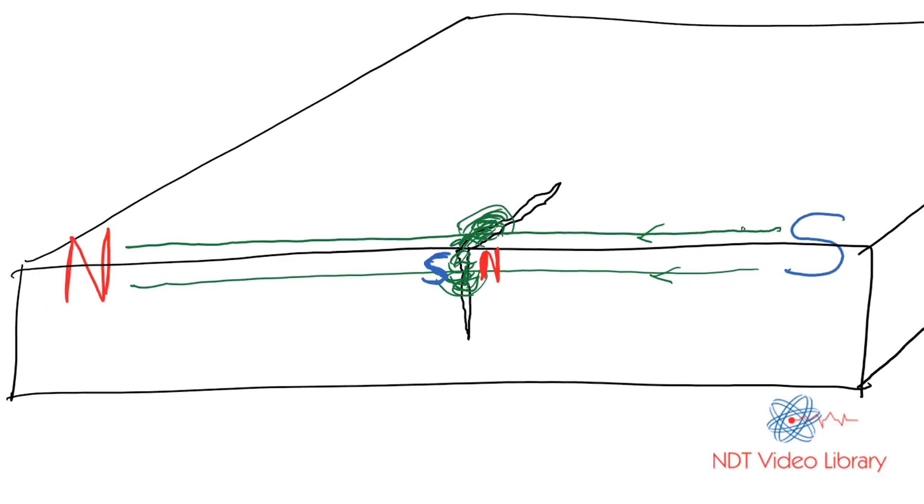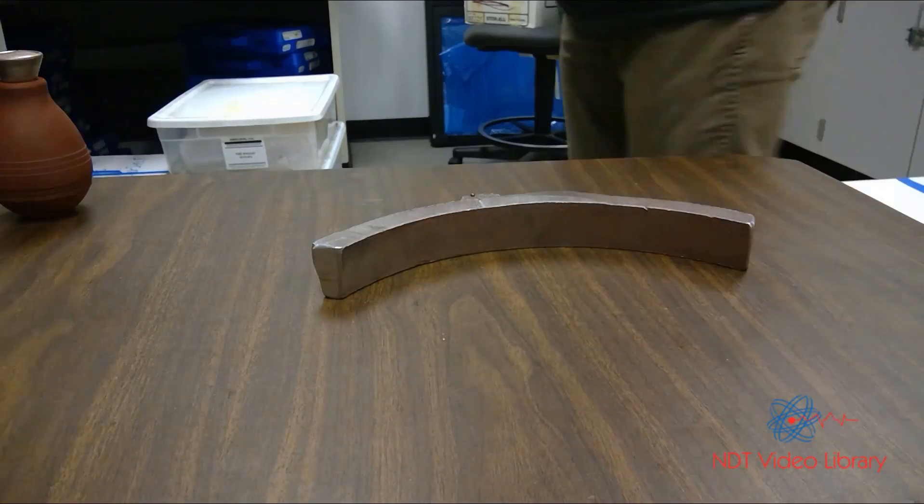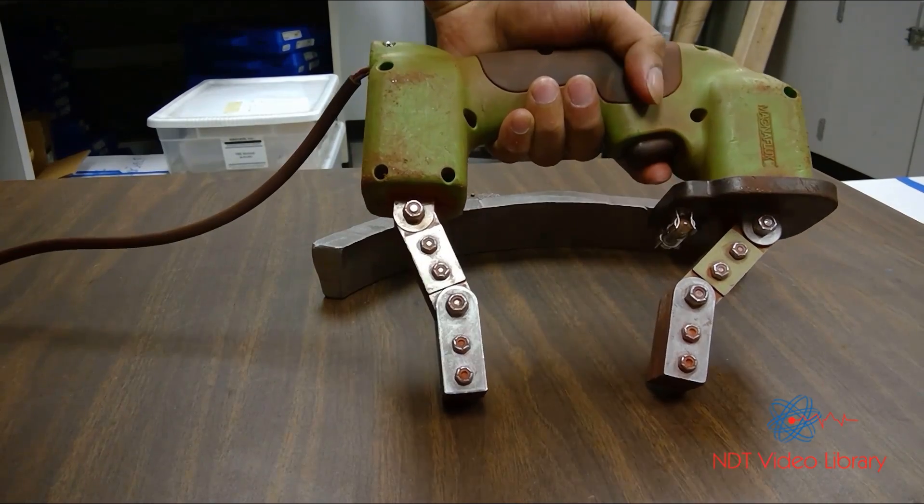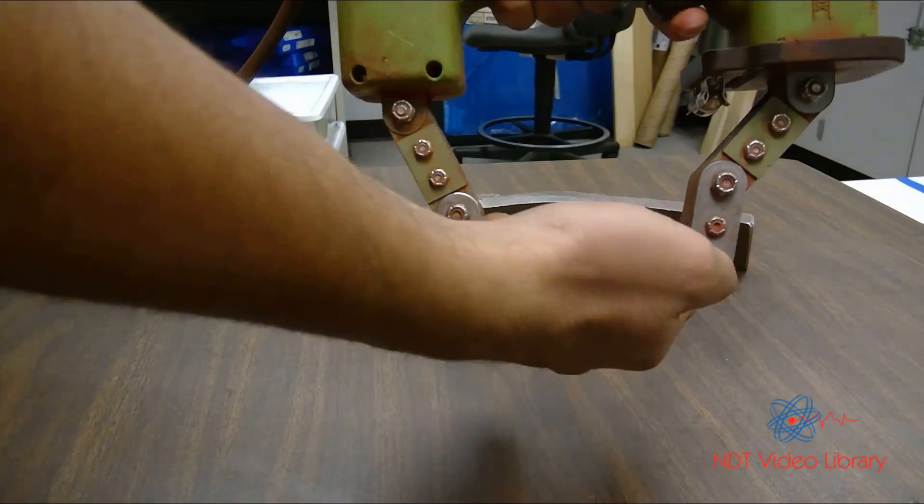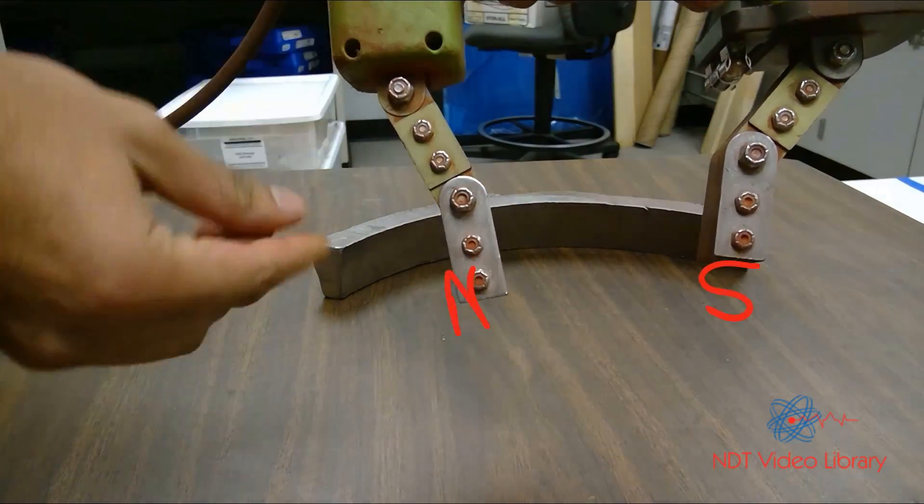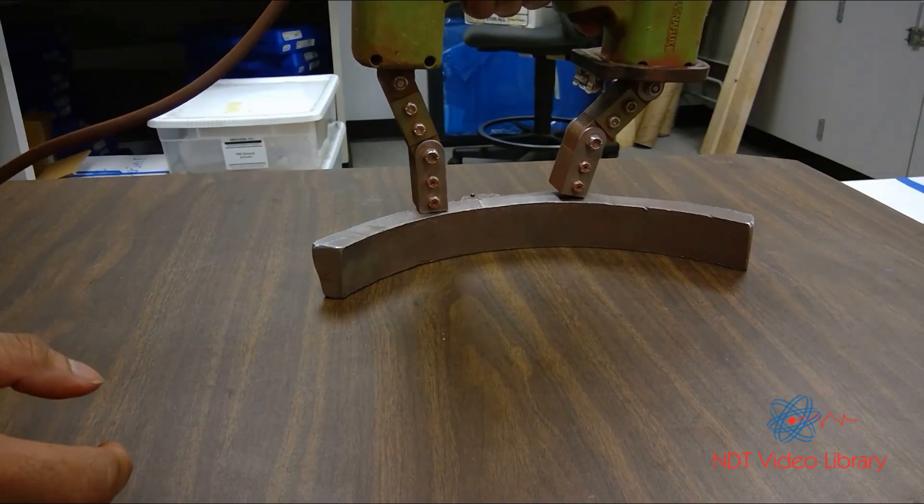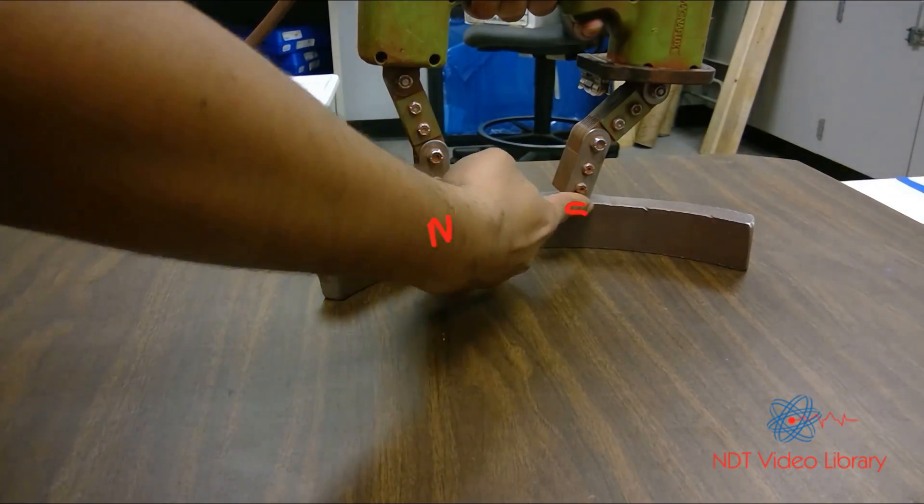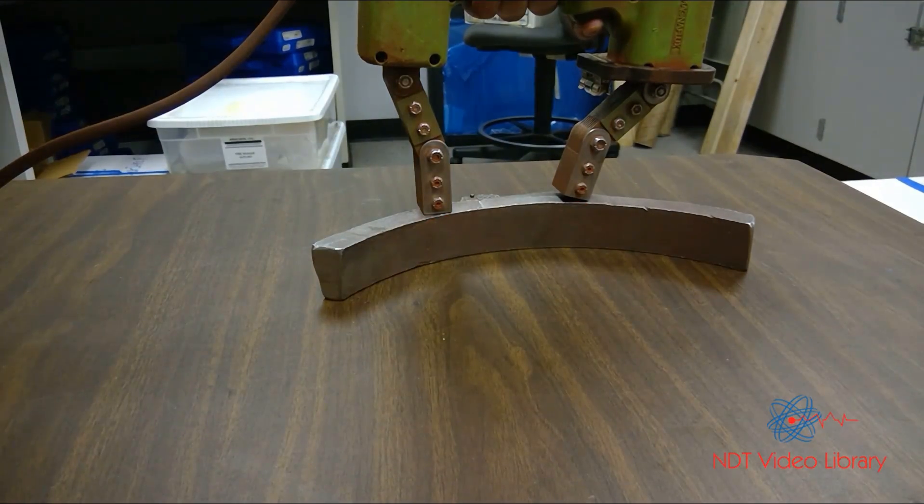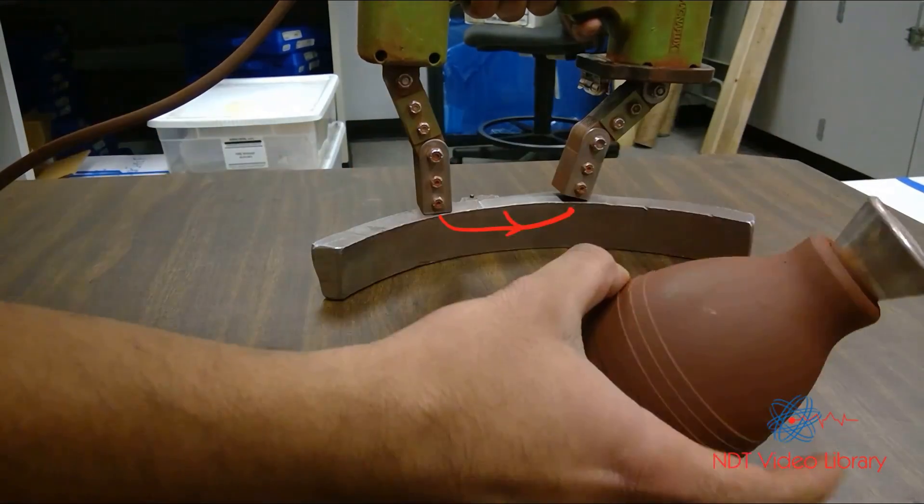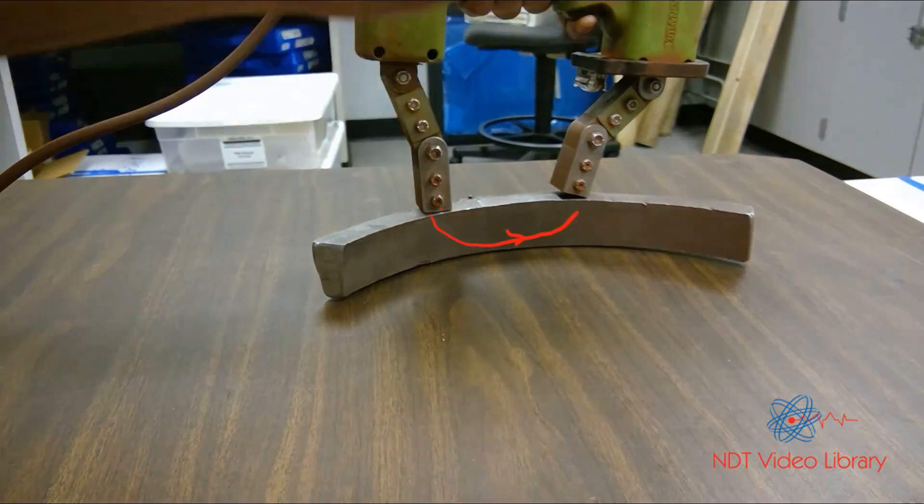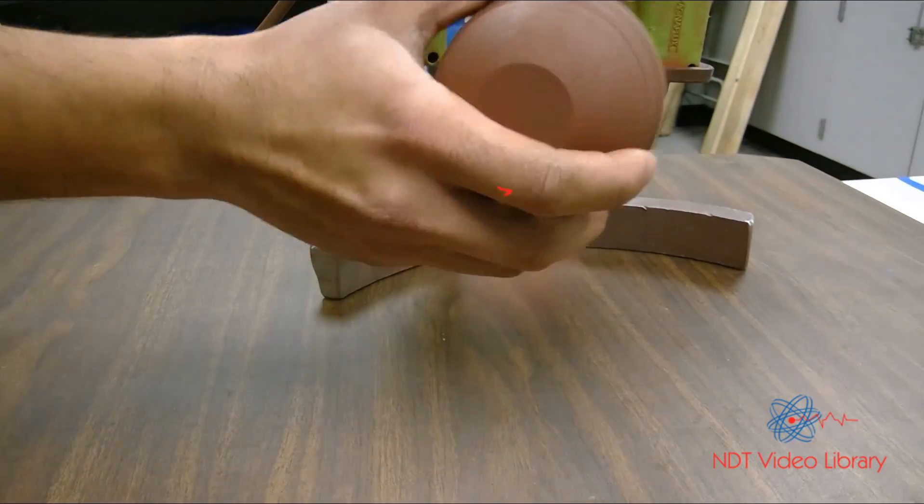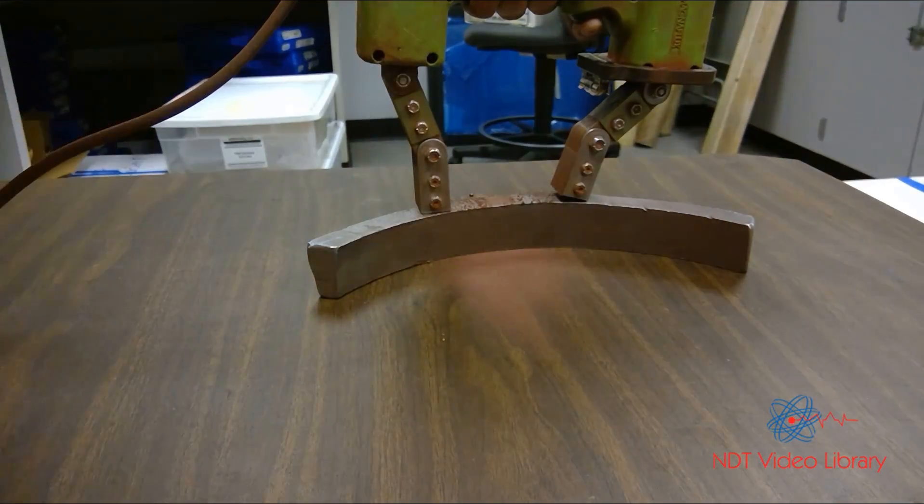Wherever there is an indication, you'll see accumulation of particles. Let's look at a practical demonstration. This is a magnetic yoke. When I flip the switch on, it generates two poles, north and south. As I place it on the test piece, I have two poles on the test block, north and south, and the field lines will move from north pole to south pole.